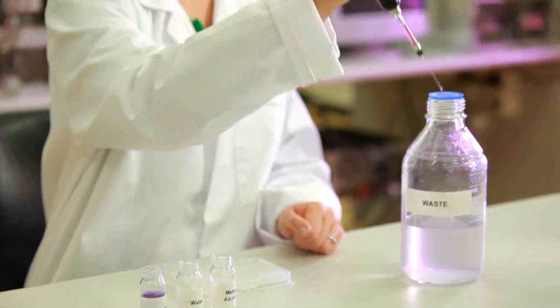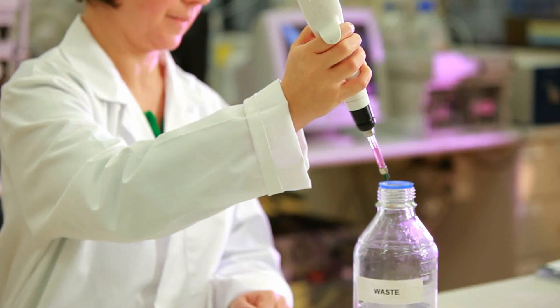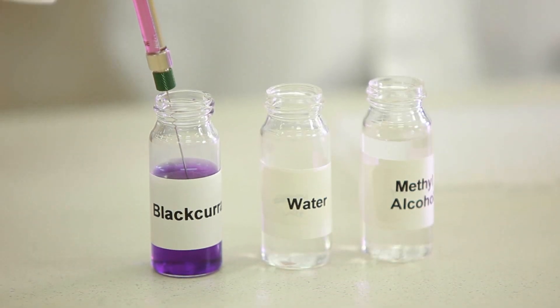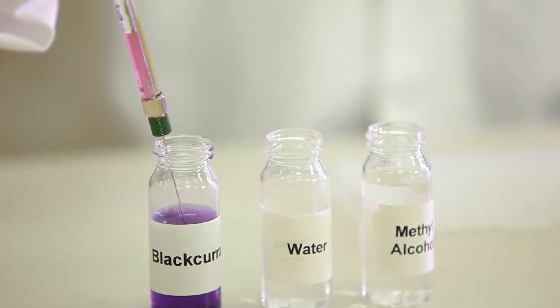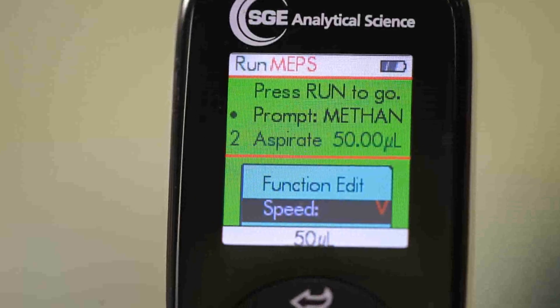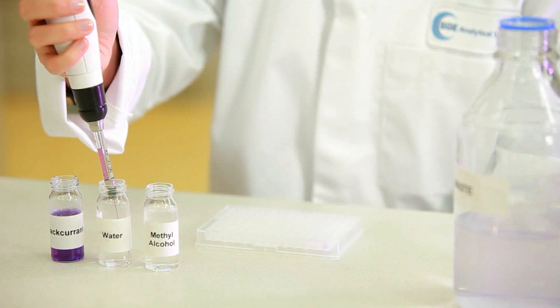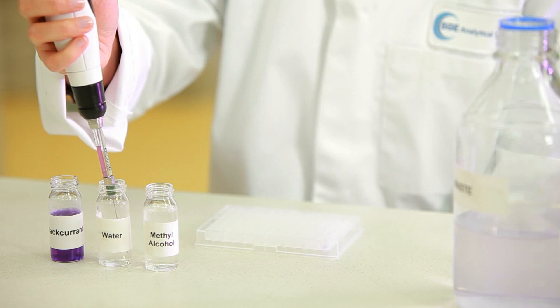This process conditions the SPE stationary phase, and now the sample can be loaded. The black current juice sample is aspirated at a predetermined flow rate and cycle number. EVOL is ideal for SPE method development since it is a flow rate dependent process.